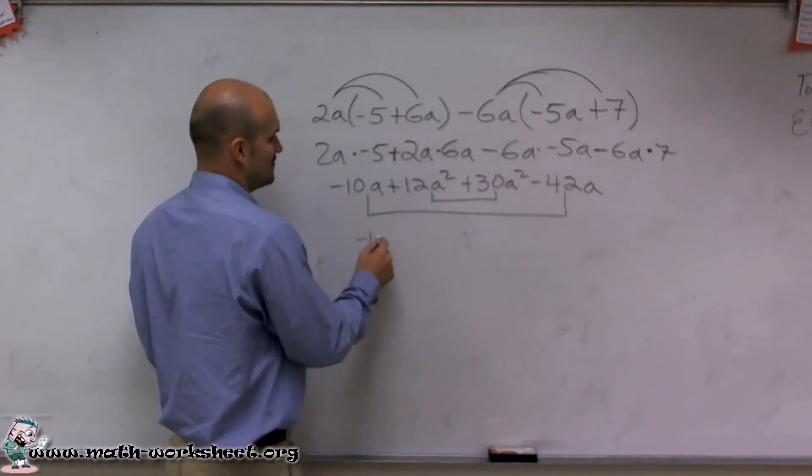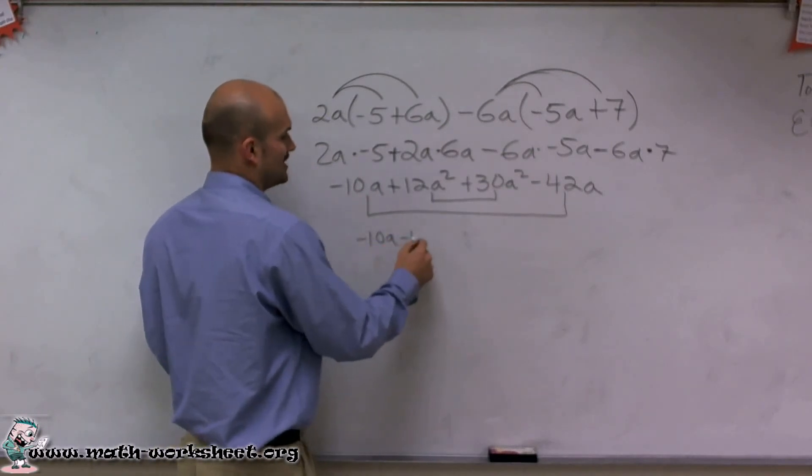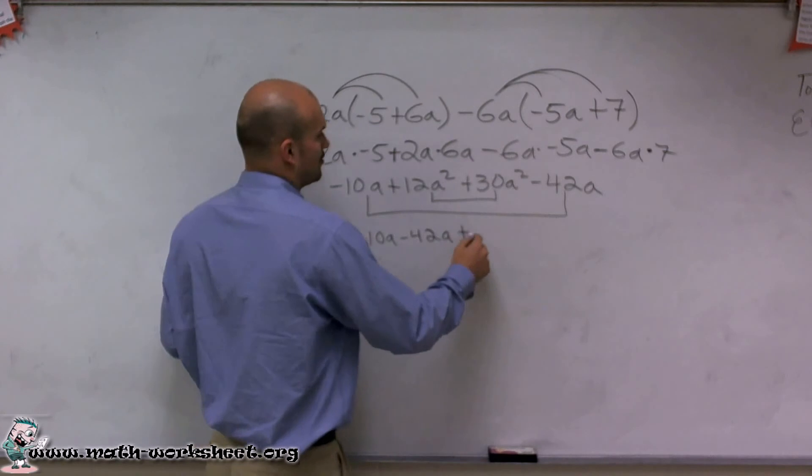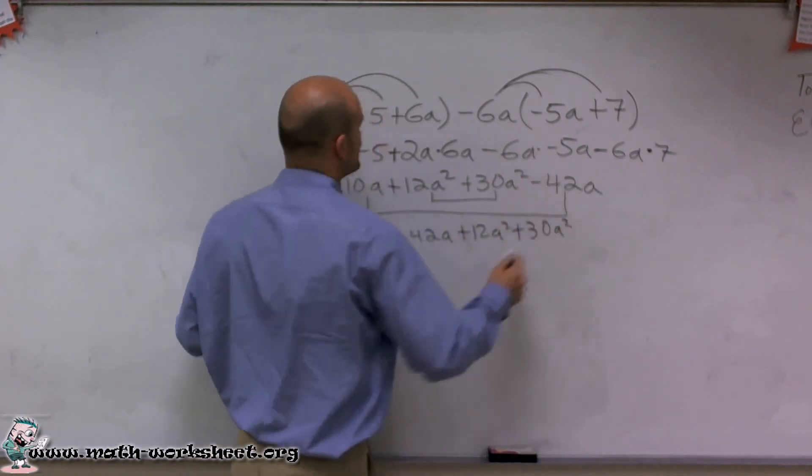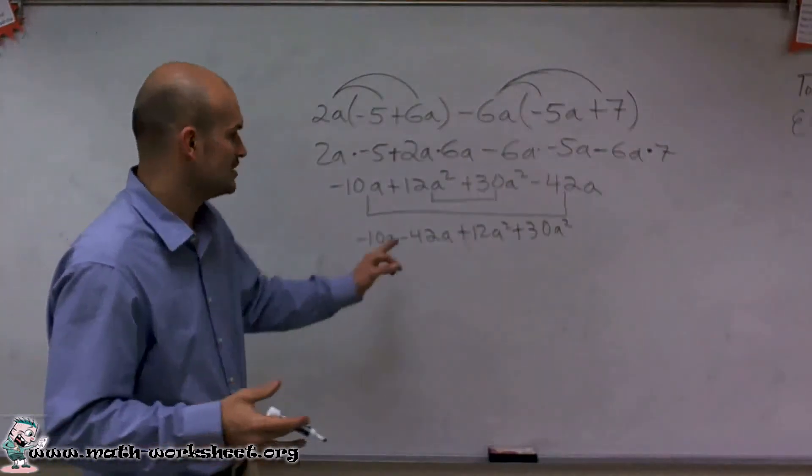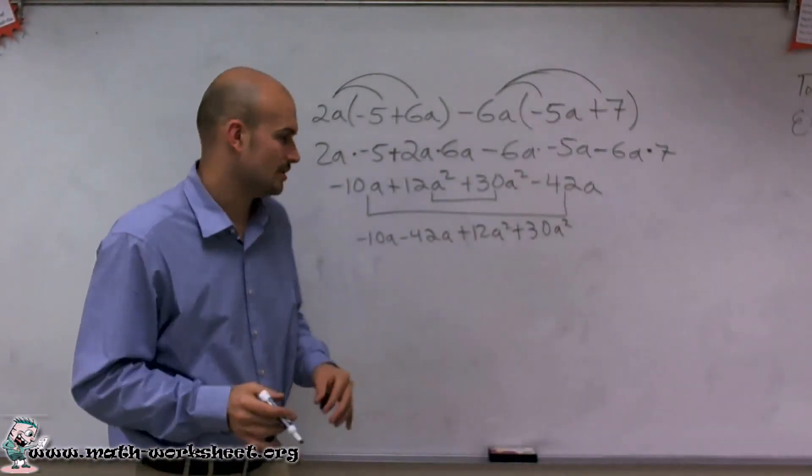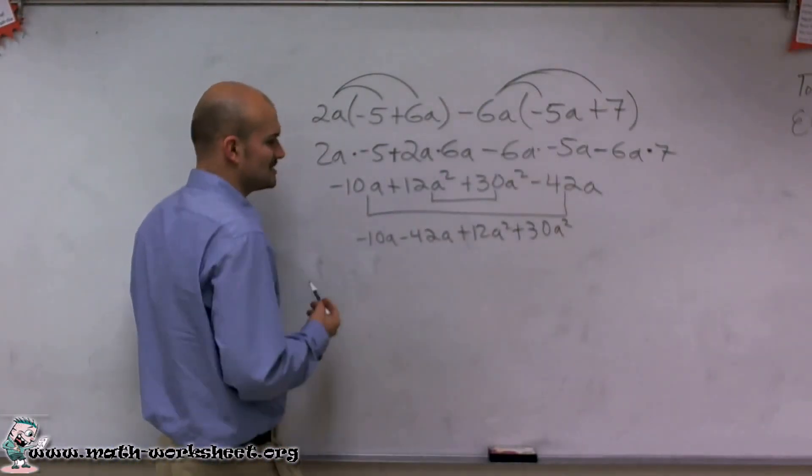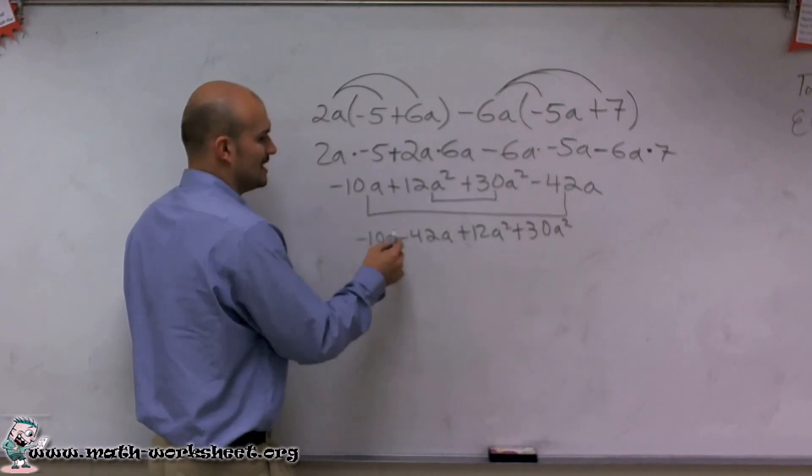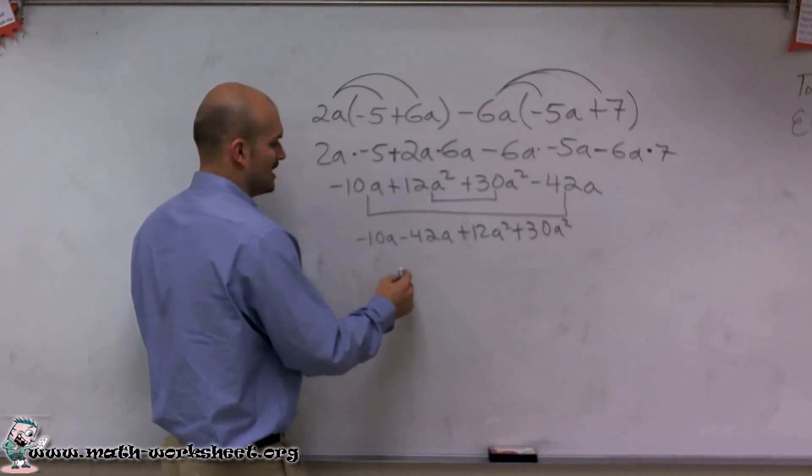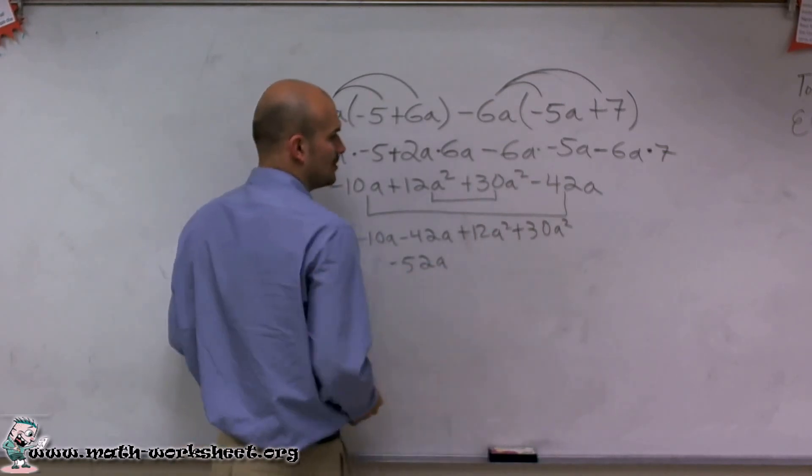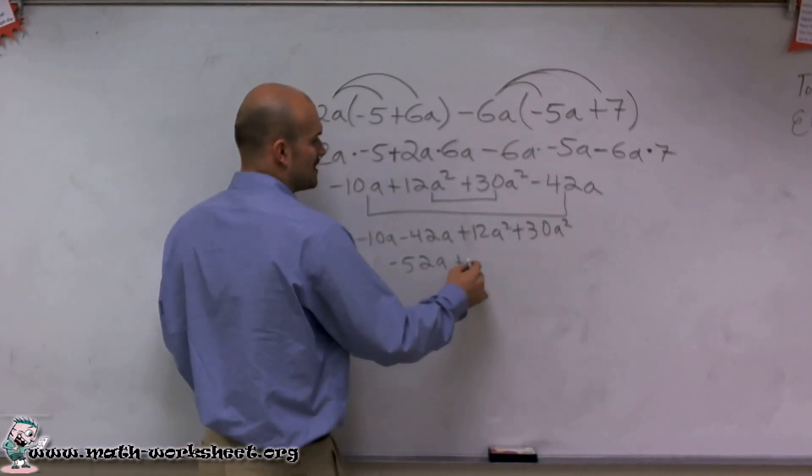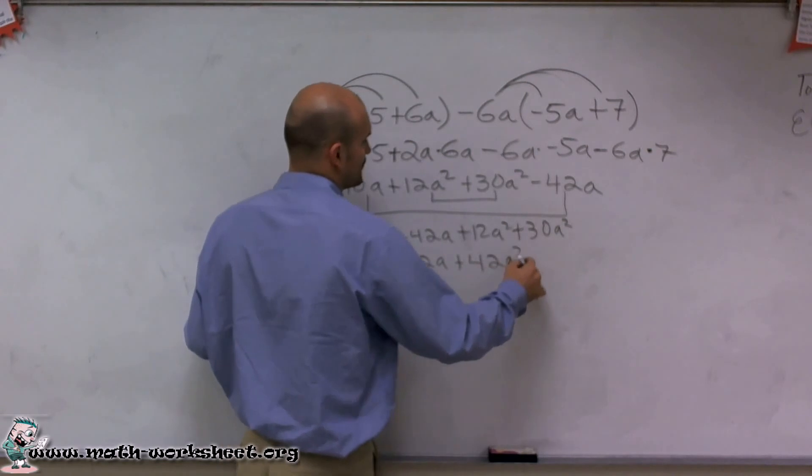Negative 10a minus 42a plus 12a squared plus 30a squared. I just rewrote the expression with like terms next to each other. It makes it simpler to look at this and say negative 10a minus 42a is negative 52a, and 12a squared plus 30a squared is positive 42a squared.